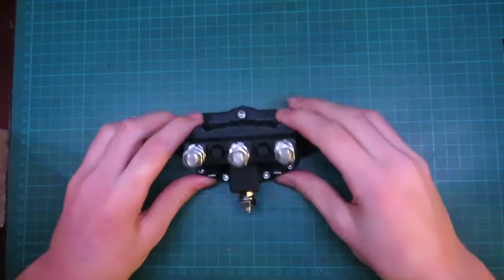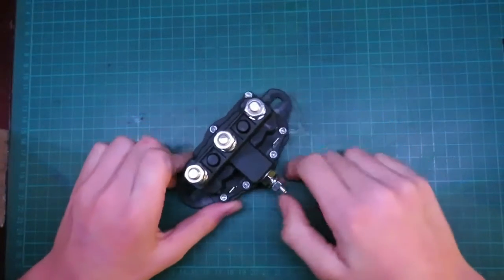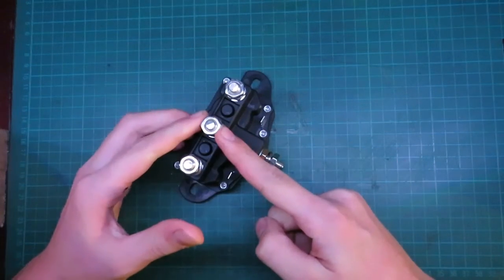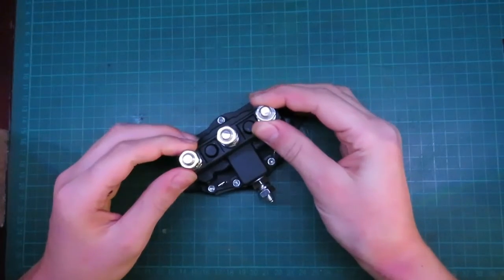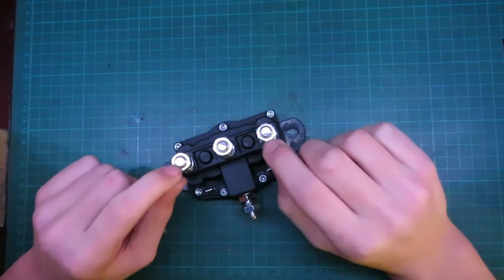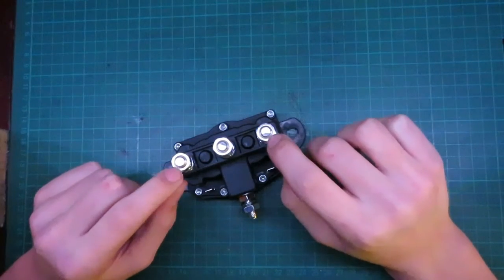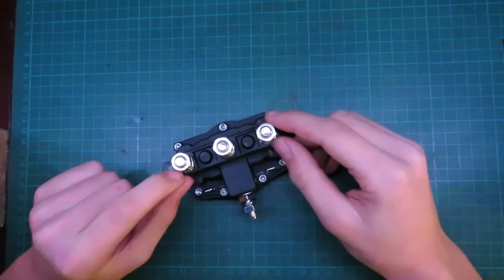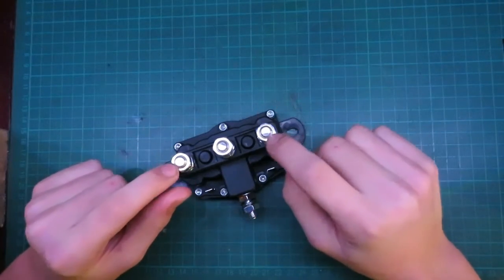Alright, so here's the reversing solenoid. You have your negative battery terminal right here, your positive battery terminal right here, your one motor terminal, and your other motor terminal. Now remember, this is for DC brushed motors only. It won't work with DC brushless or AC motors.